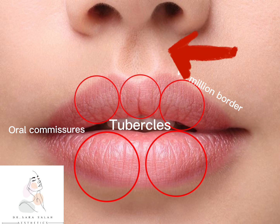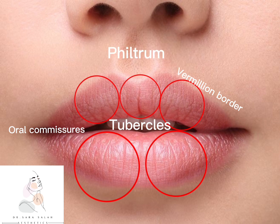The small depression that runs from the upper lip to the base of the nose is called the philtrum. In addition to the anatomical subunits, there are proportions that must be kept in mind when analyzing the lips and planning augmentation or volume restoration with filler.